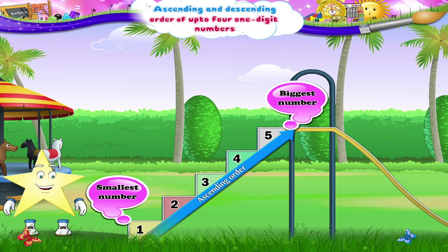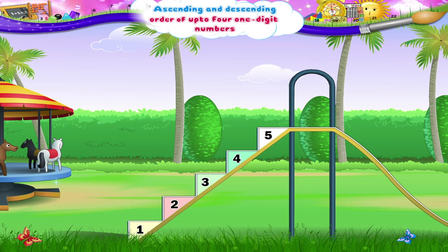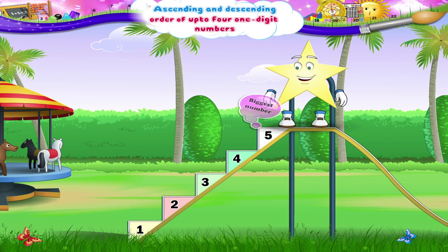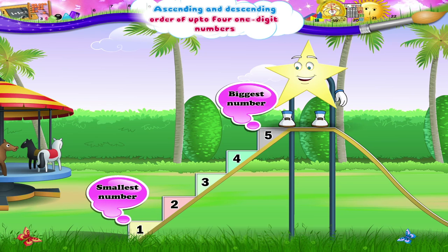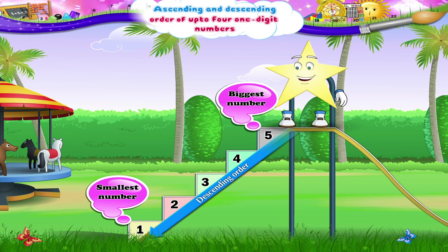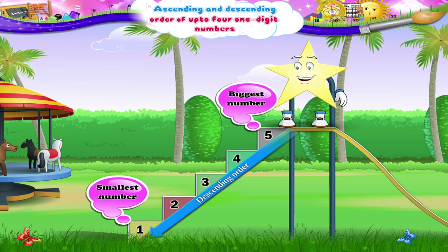Up the slide. And when we go from the biggest number to the smallest number, we say the numbers are arranged in descending order. Five is the biggest number and one is the smallest. So, five, four, three, two, one — descending order. Down the slide.